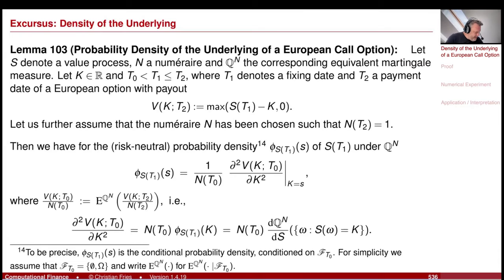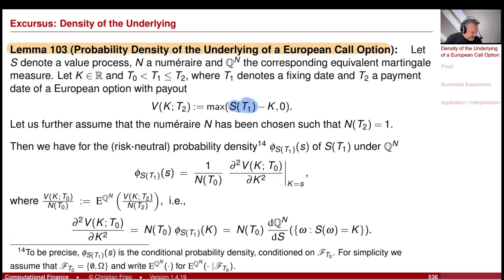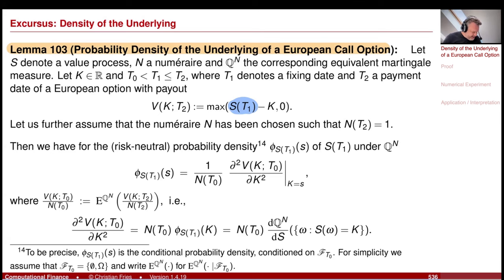Here is this little lemma. We consider the probability density of the underlying of a European call option. The remarkable thing is that I assume I have some model that generates this random variable S at T1, and I will now value a European option on this random variable. This could be a stock; it could also be an interest rate model — then it is a cap. For example, if it is a forward rate, it is a caplet, an option on the forward rate. It looks like a stock here because I write S, in which case it is a call option on the stock, but it could be anything. I assume that this S is generated by a model.